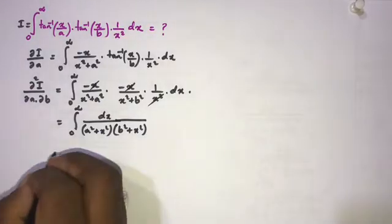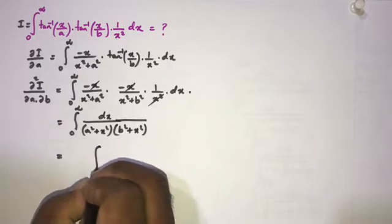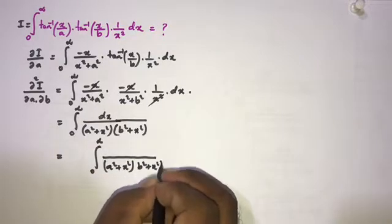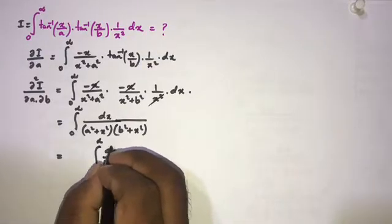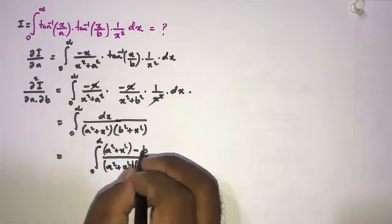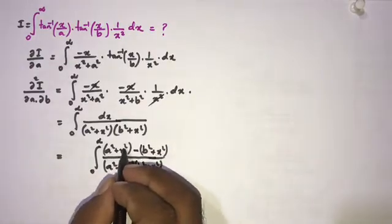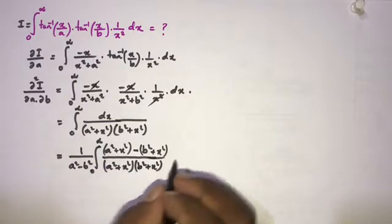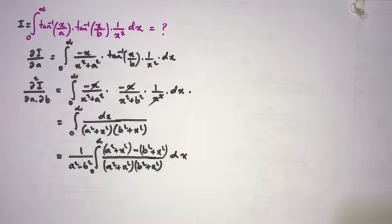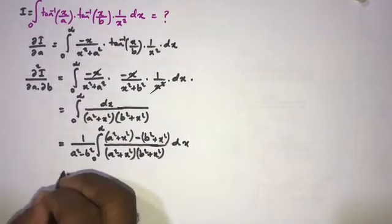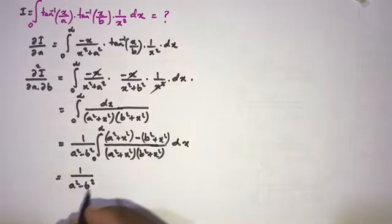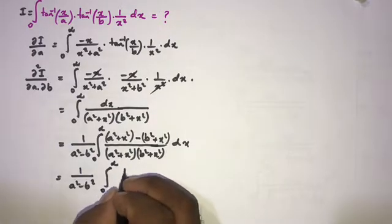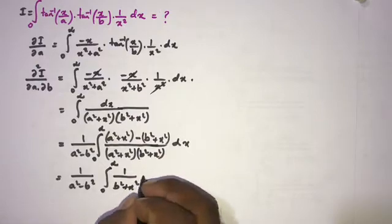Now we can use partial fractions. In the denominator we have (a² + x²)(b² + x²). In the numerator we write (a² + x²) minus (b² + x²), so the x² terms cancel and we get (a² − b²). We factor out 1/(a² − b²) and split the integrand: 1/(b² + x²) minus 1/(a² + x²) dx.